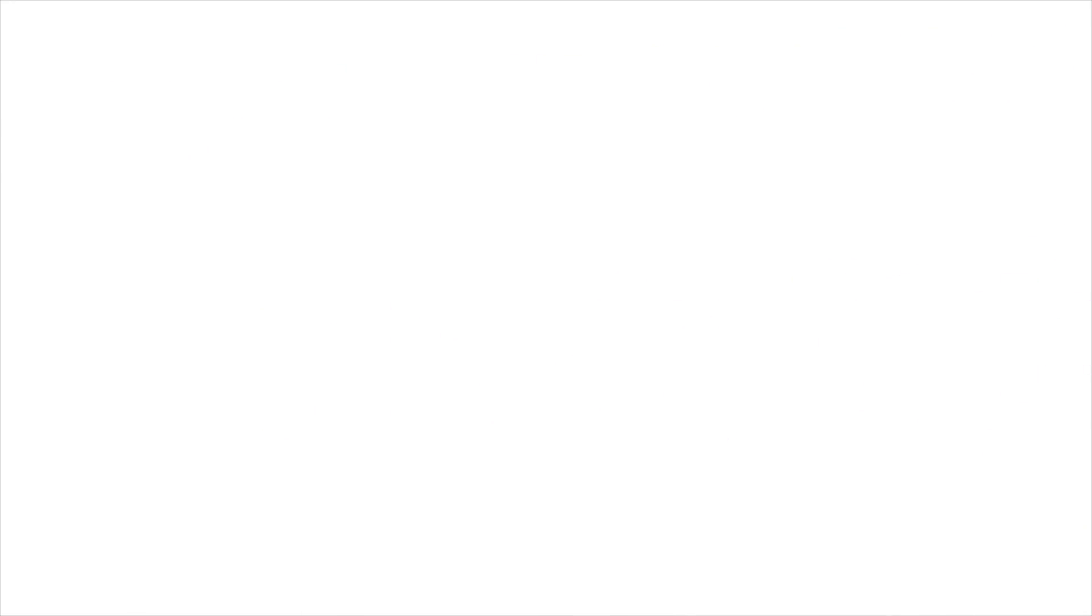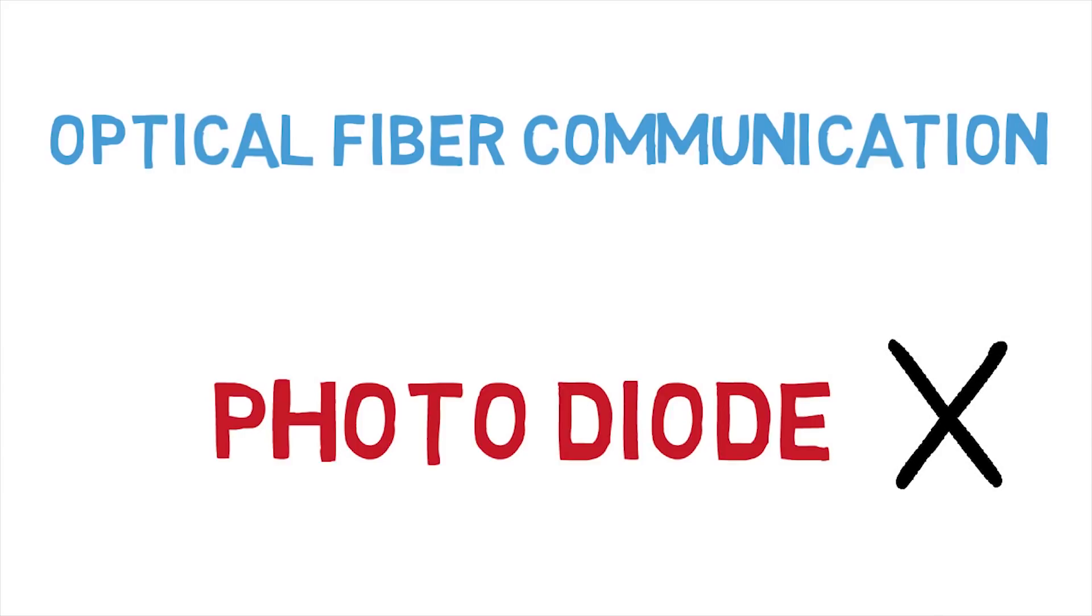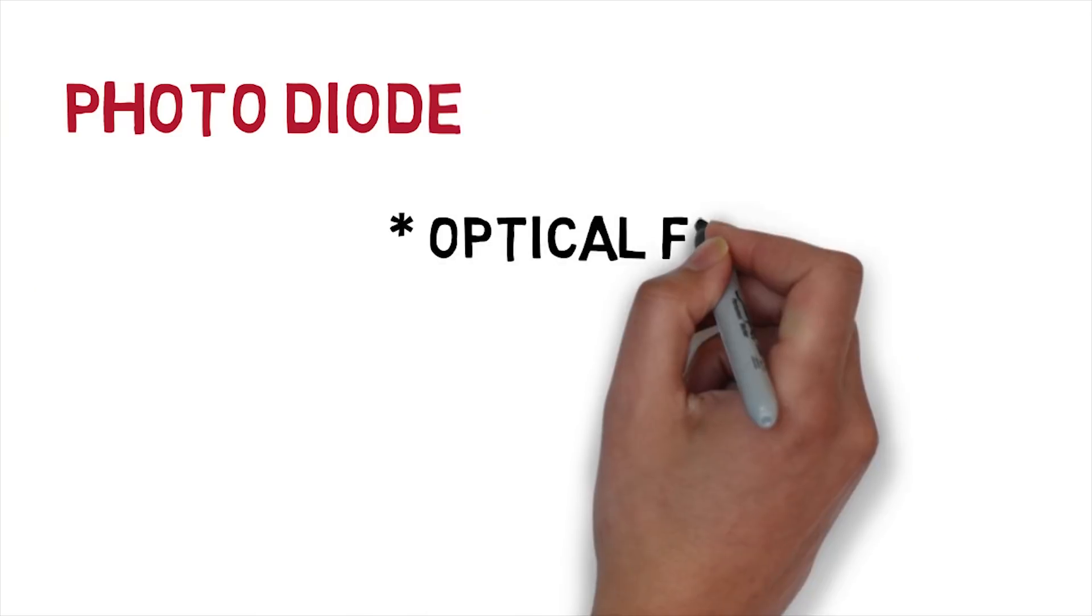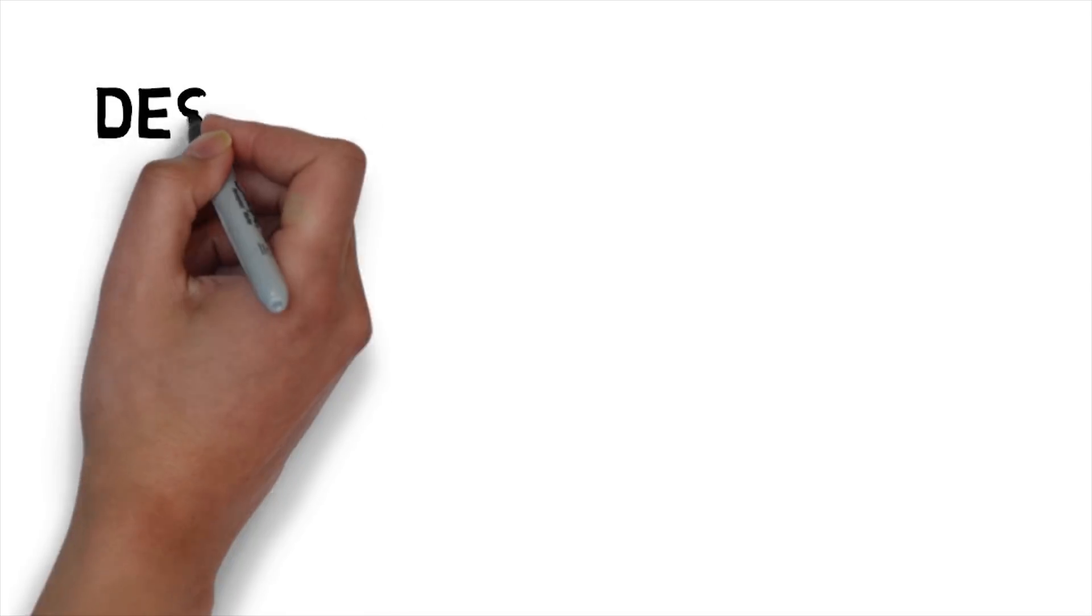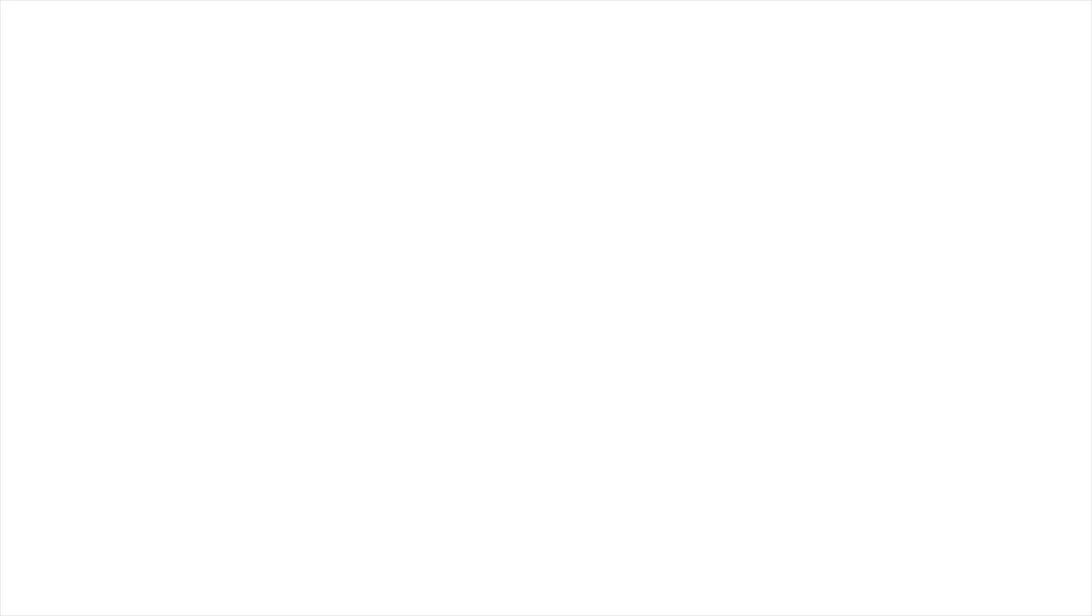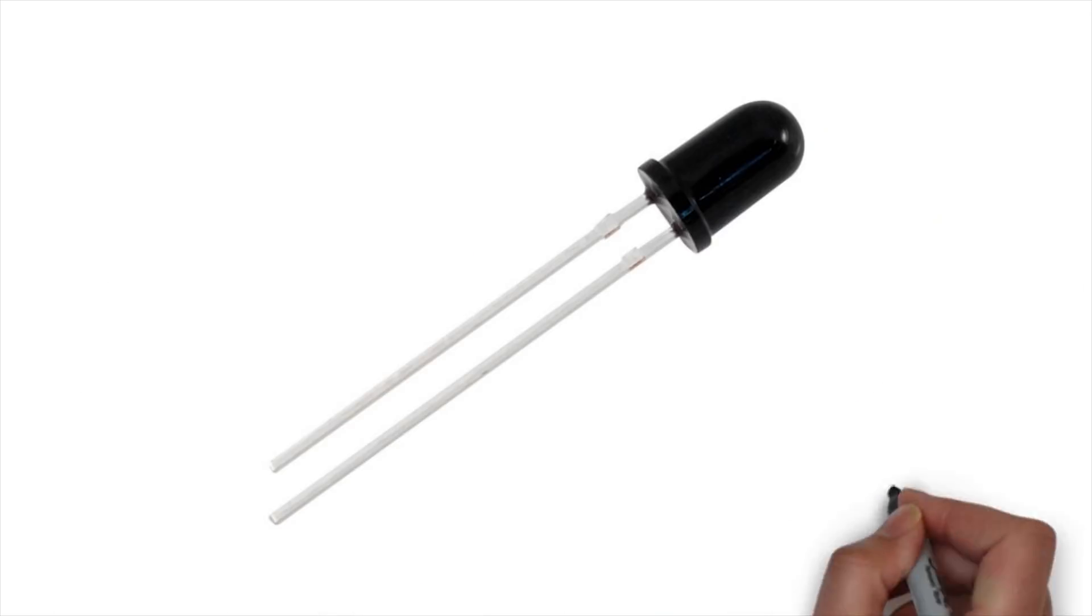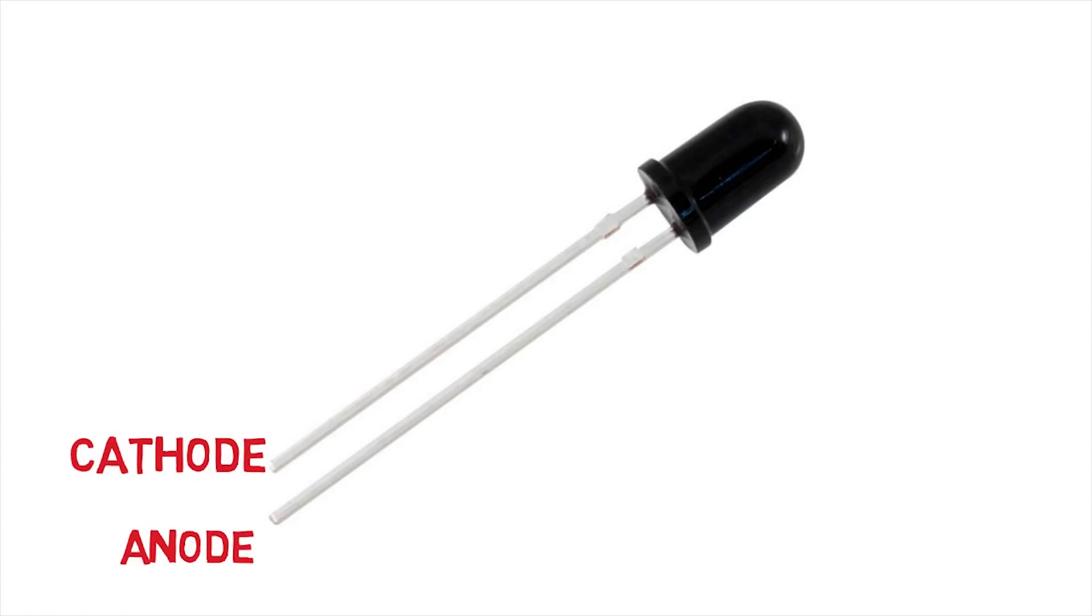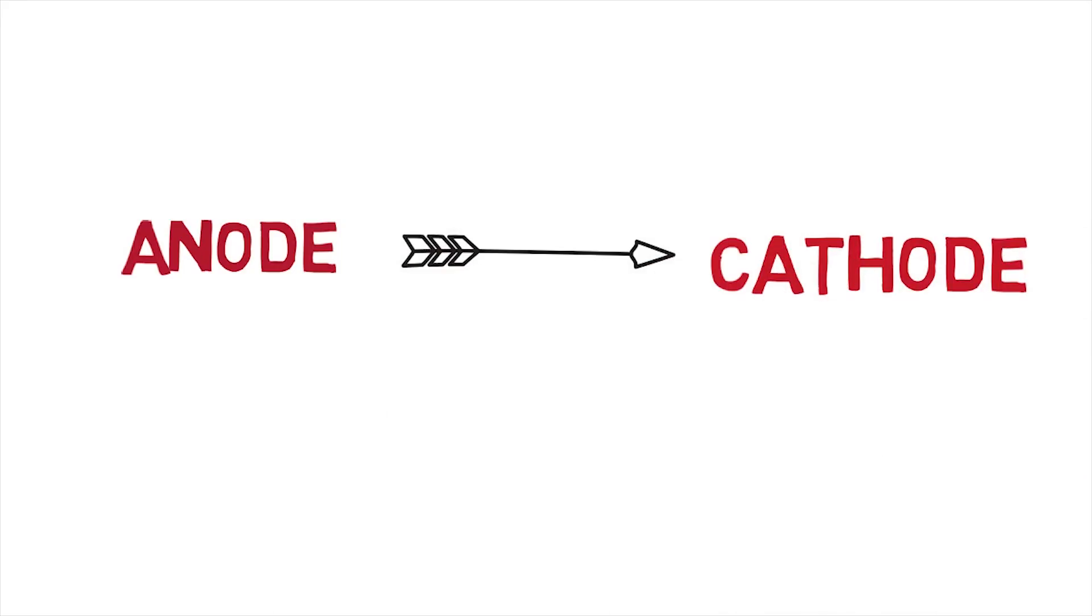In most optical fiber communication systems, we can see this photodiode. It's time for the response time. We are in PN Junction. We can design the PN Junction. The junction is P and N. You can see the LED light compared to the photodiode.